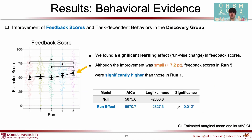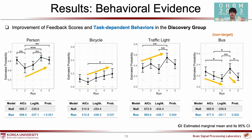For the behavioral results, we found a significant learning effect in feedback scores for the discovery group. Although the improvement was subtle, feedback scores in run 5 significantly improved compared to run 1. We also found a significant learning effect on task-dependent behaviors. Capture probabilities for all three target objects improved. Interestingly, a non-target object, bus, showed a negative trend since it did not help improve feedback scores.